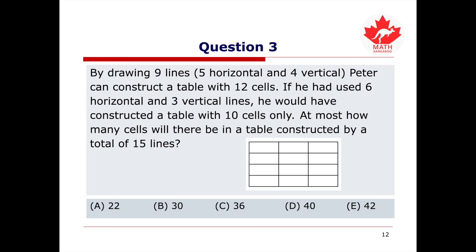Question 3: By drawing 9 lines — 5 horizontal and 4 vertical — Peter can construct a table with 12 cells. If he had used 6 horizontal and 3 vertical lines, he would have constructed a table with 10 cells. At most, how many cells will there be in a table constructed by a total of 15 lines? Please pause the video and try this question on your own.